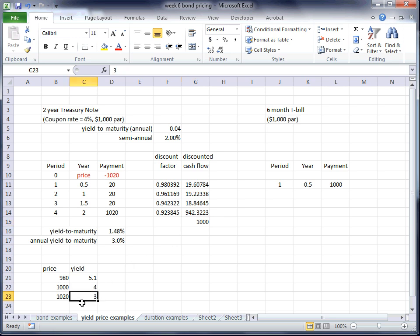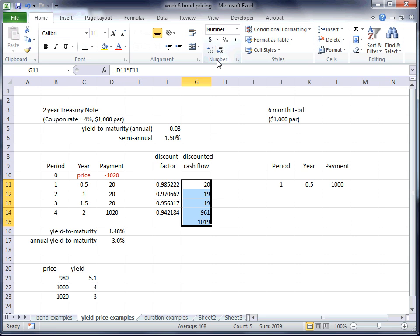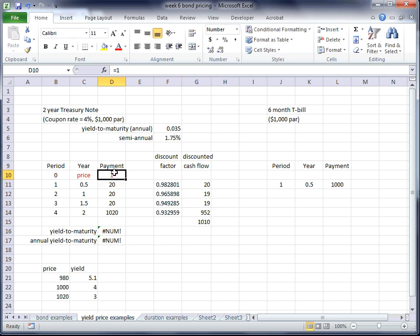If I put a 3% yield to maturity in here, I'll get a $1,020 price. A little off by rounding. Let me put 3.5%. 3.5% equals a $1,010 price. If I change this to 4%, $1,000 payment. As you can see, they're all linked together.